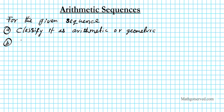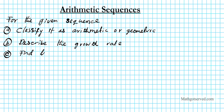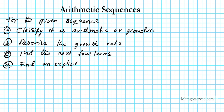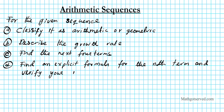Next, part B, describe the growth rate. Then part C, find the next four terms. Part D, find an explicit formula for the nth term. And last but not least, part E, find the 50th term.